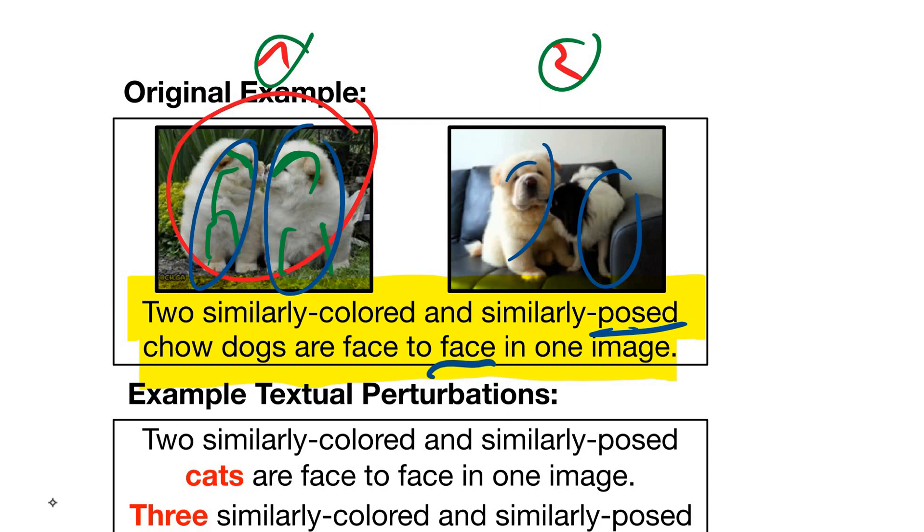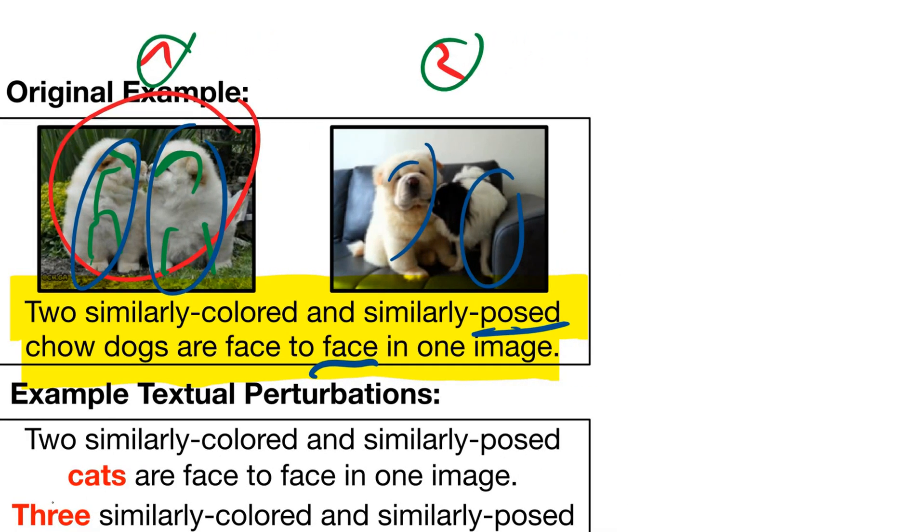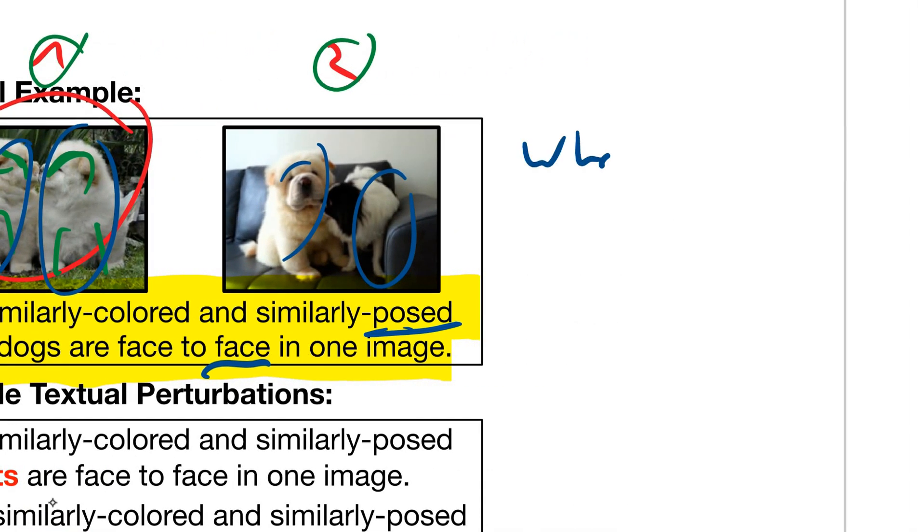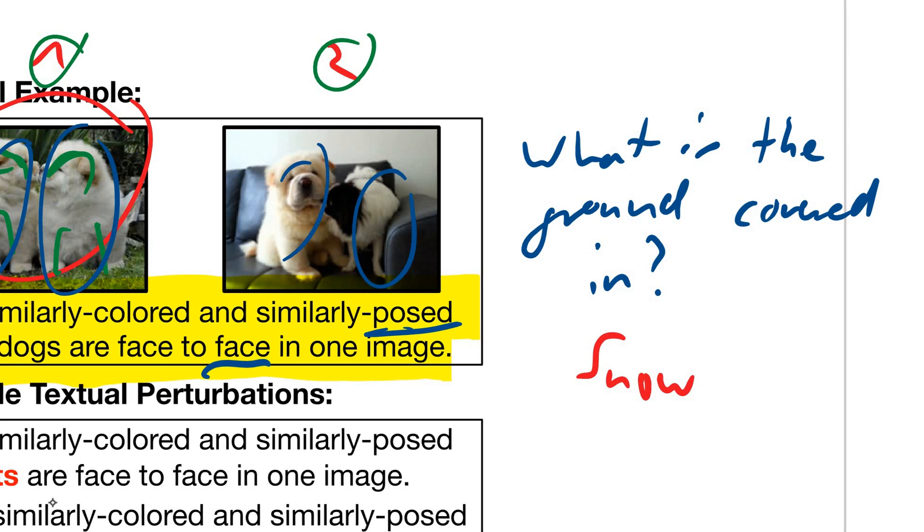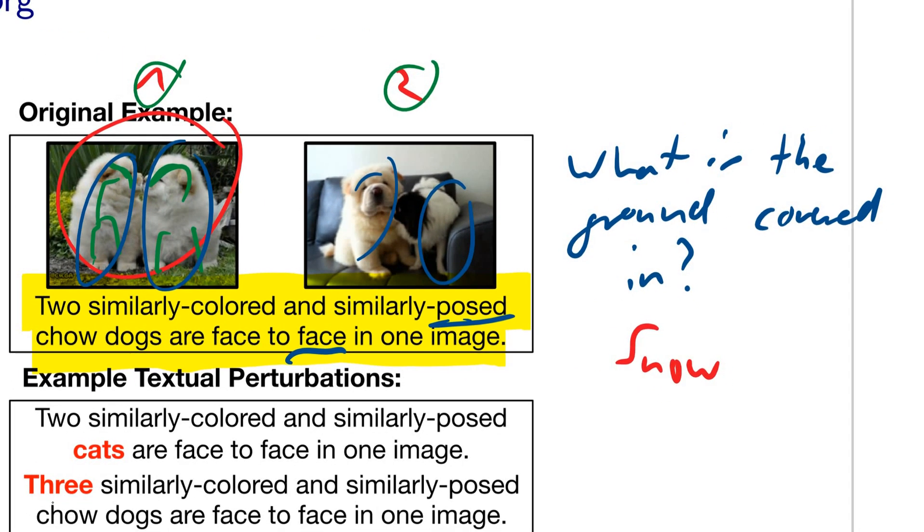For example I know that in a particular visual question answering system whenever there is a question of what is the ground covered in, or something like this, the answer is always snow. You don't even have to look at the image. And similarly there are a lot of these kind of tricks that the models learn.